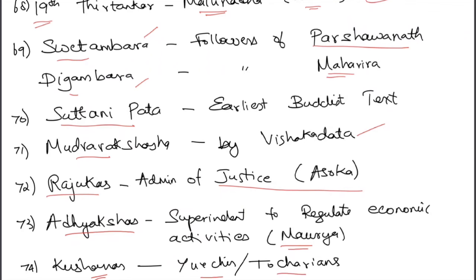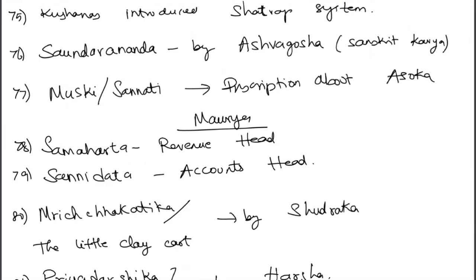Rajukas were administrators of justice in the Ashoka period. Adhyakshas were superintendents regulating economic activities during the Mauryan period. Kushanas were also called Yuchins or Tocharians — an important UPSC fact. Kushanas were the first to introduce the Satrapy system — a feudal system where lords govern regions, collect taxes, and pay tribute, similar to the Iqta, Mansabdari, and Polygar systems.